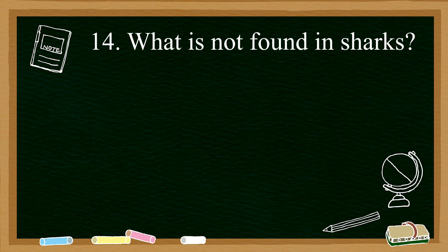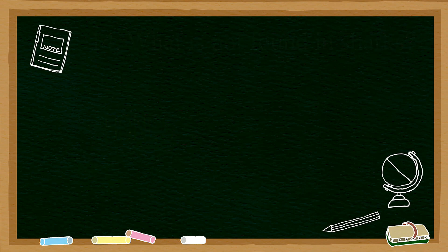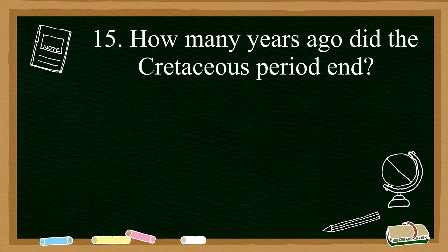Number fourteen: what is not found in sharks? This is a quite interesting question and I want you to think about it. Sharks don't have bones. However, they are classified as vertebrae because they have a cartilage column.